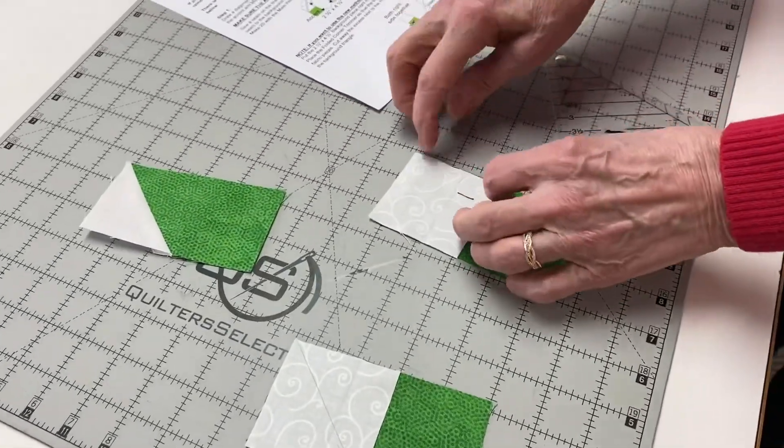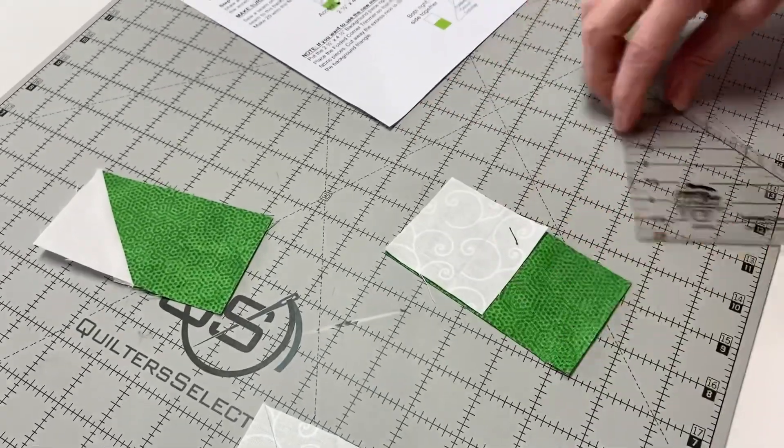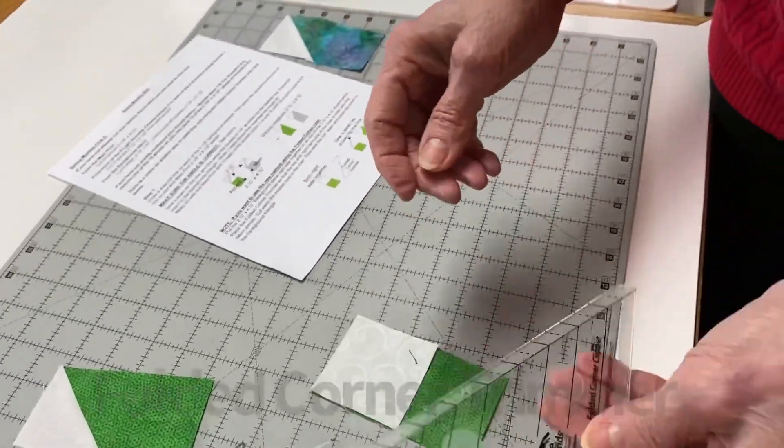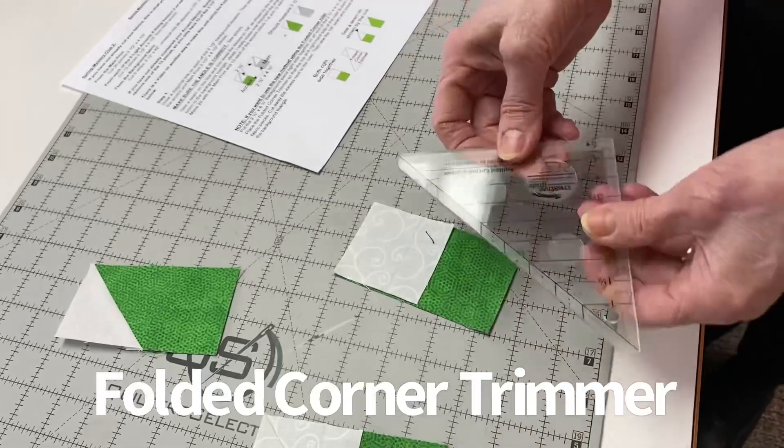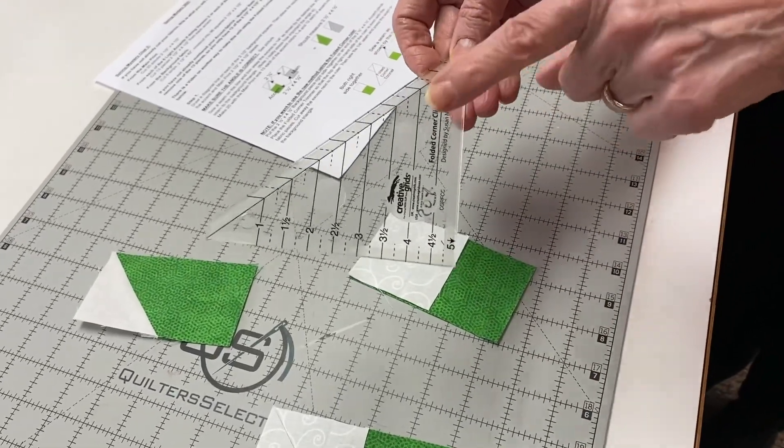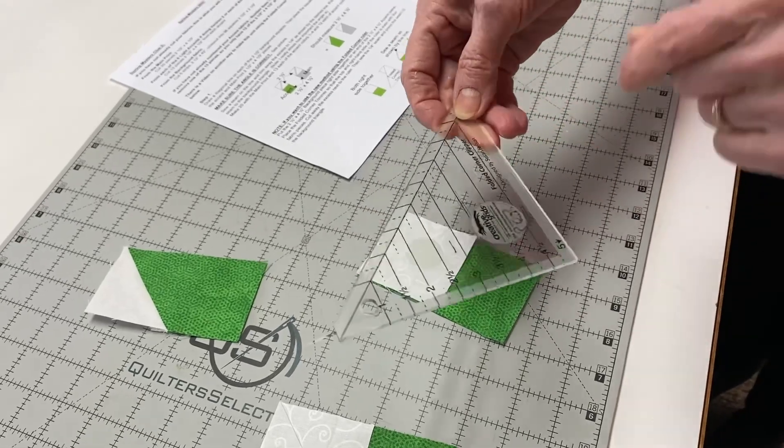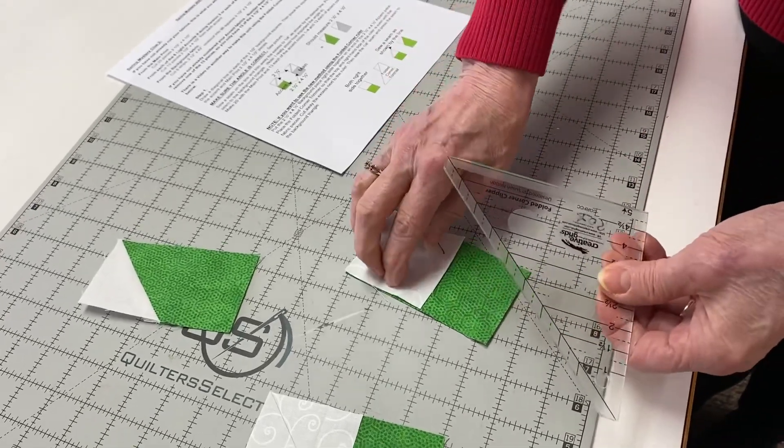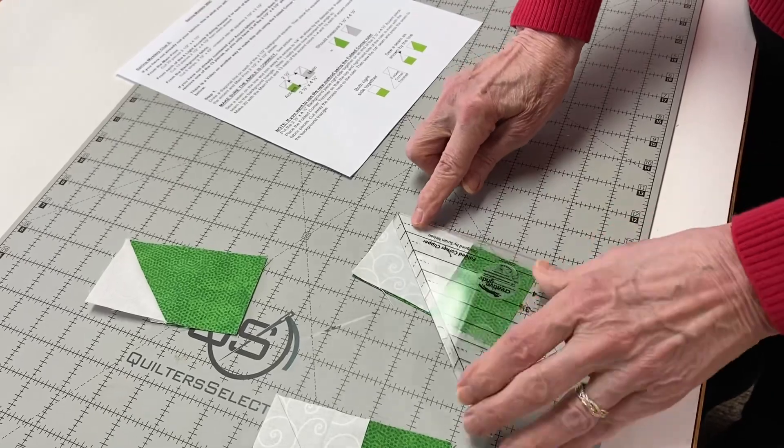This is another one of my favorite tools: the folded corner trimmer. This is really just a wonderful tool. There's so many things that you can do with it. Creative Grids has got wonderful YouTube videos out on how to use it in all different ways.